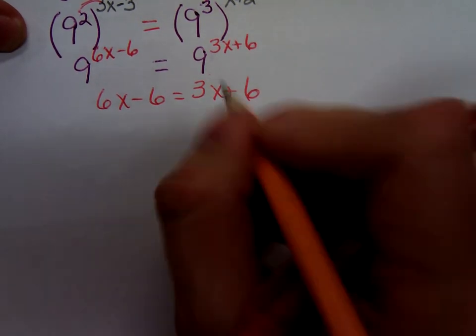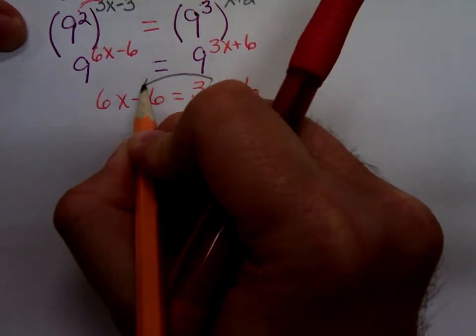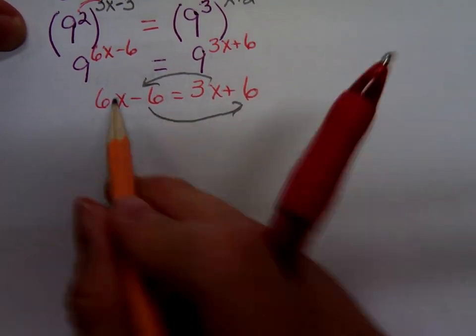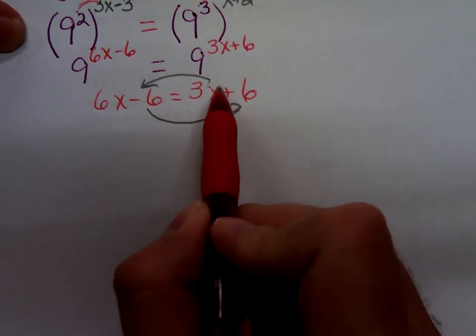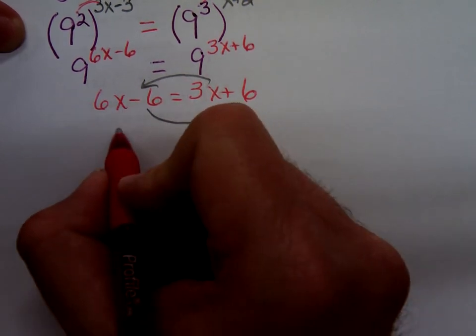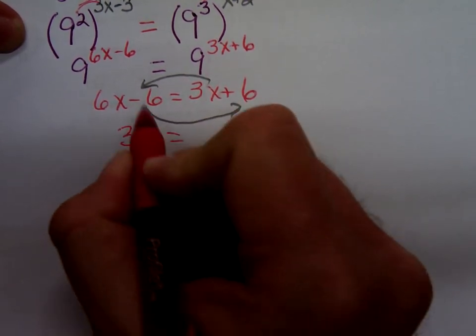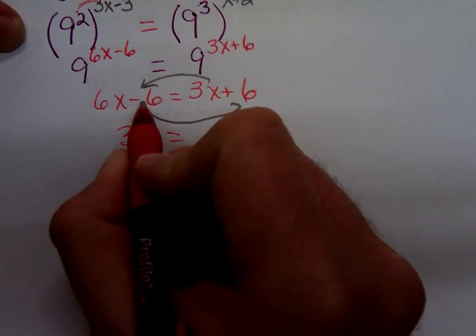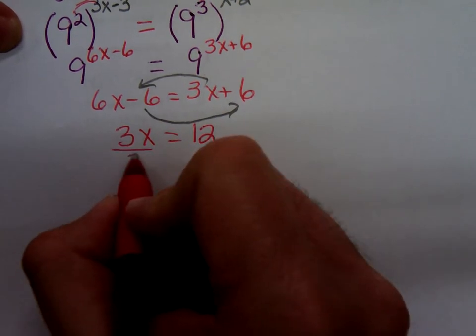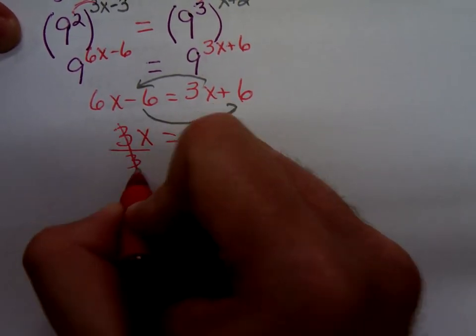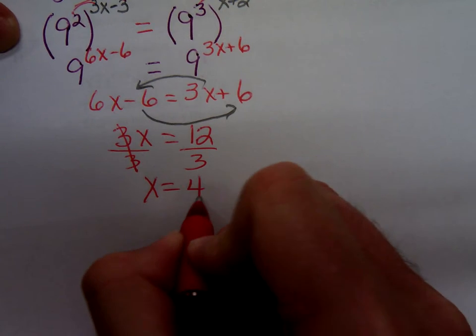How do I solve this? Well, just a linear equation. 6x minus 3x. That would be a 3x. And then, I'm adding this 6 to both sides. So, 3x equals 12. Divide by 3 to get x equals 4.